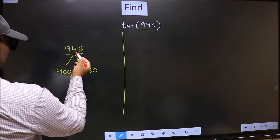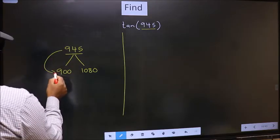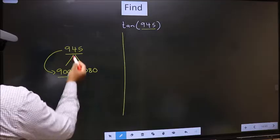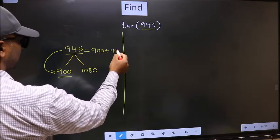Next, 945 is close to which number? This is close to 900. So in place of 945, now we should write 900 plus 45.